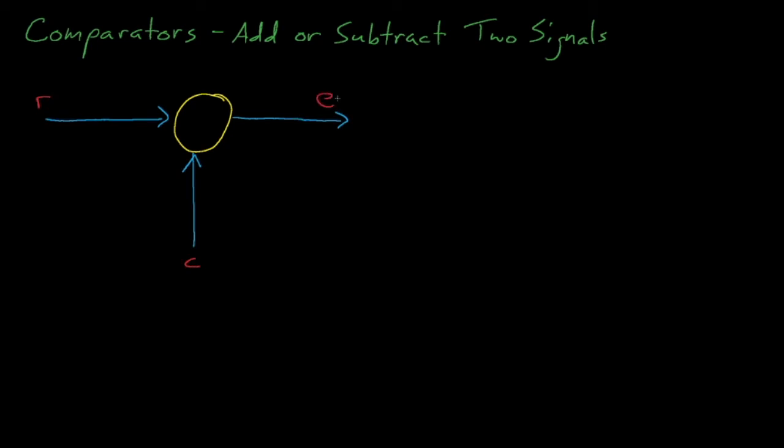There are all sorts of control elements that can modify a signal. A comparator, for example, is a device that adds or subtracts two signals. Here, the output E is equal to R, which flows through the positive sign of the comparator, minus C, which flows through the negative sign.